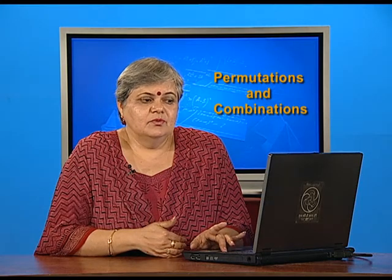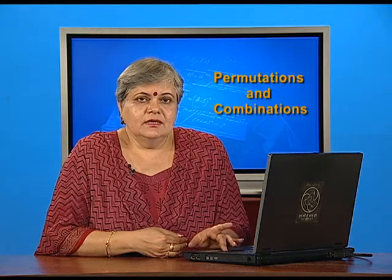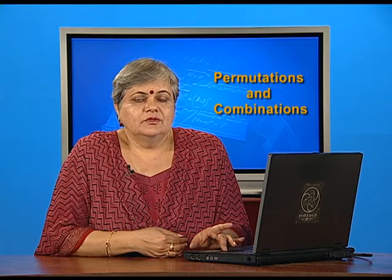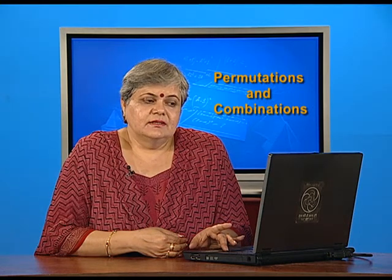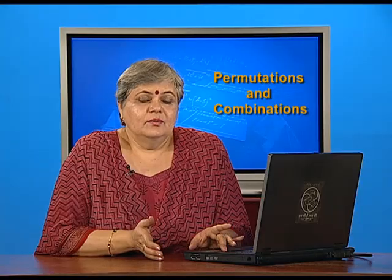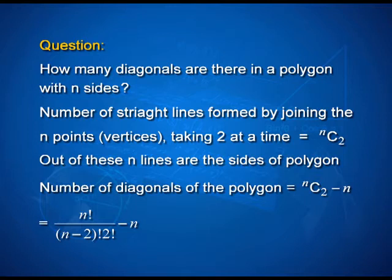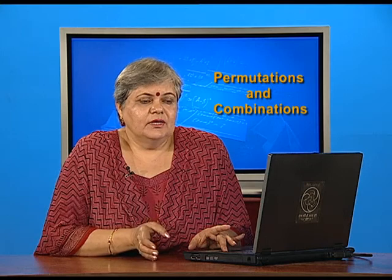The same understanding can be used for a polygon with n sides: how many diagonals does it have? Diagonals are segments drawn by joining 2 vertices. Taking n points 2 at a time gives nC2 possible segments. However, this includes the n sides, which are not diagonals. So the number of diagonals is nC2 minus n, which simplifies to the result n times n minus 3, divided by 2 - a formula you may use anywhere to find how many diagonals a polygon with n sides has.